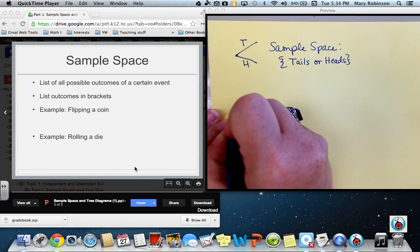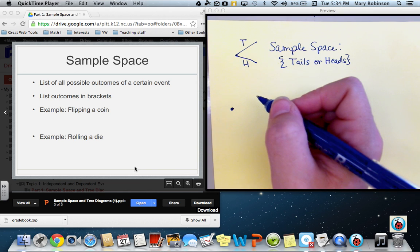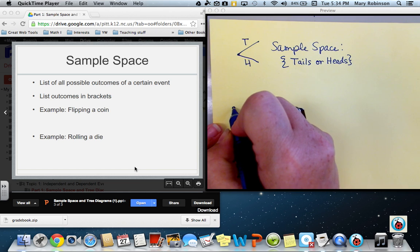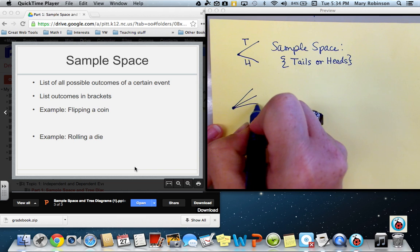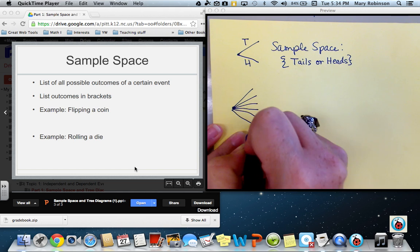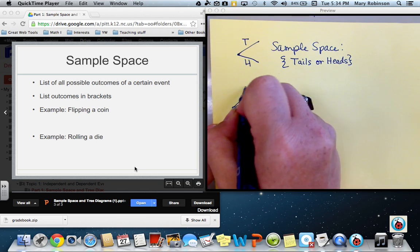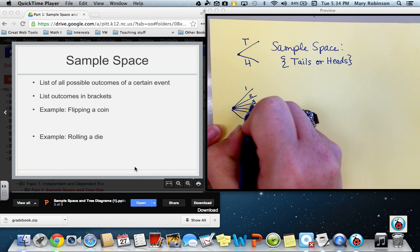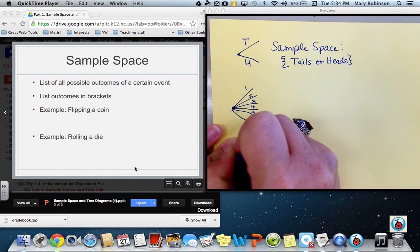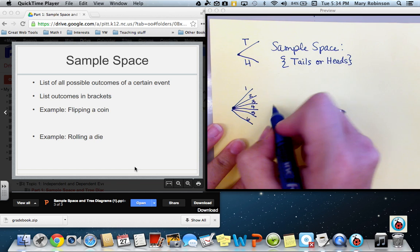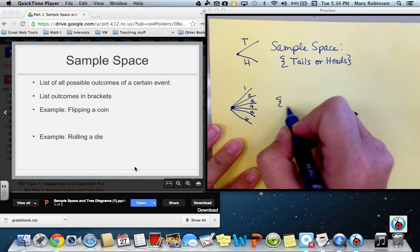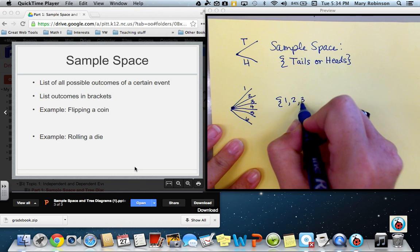The sample space for rolling a die contains six possible outcomes. When one rolls a die, they could roll a one, a two, three, four, five, or six. When we list the sample space, we can simply make a list of the numerals.